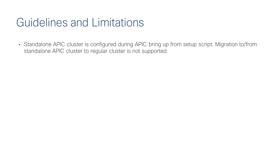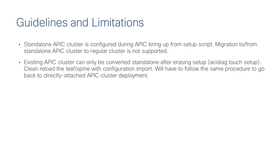There are some limitations with the Standalone APIC cluster feature. The Standalone APIC cluster can only be configured during initial setup of the APICs using the setup script. Migrating from a directly connected APIC to a Standalone APIC and vice versa is not supported. For existing fabrics that have directly connected APICs, migrating to a Standalone APIC cluster involves erasing the configuration, rerunning the setup script, selecting the Standalone option, and then reimporting the configuration.